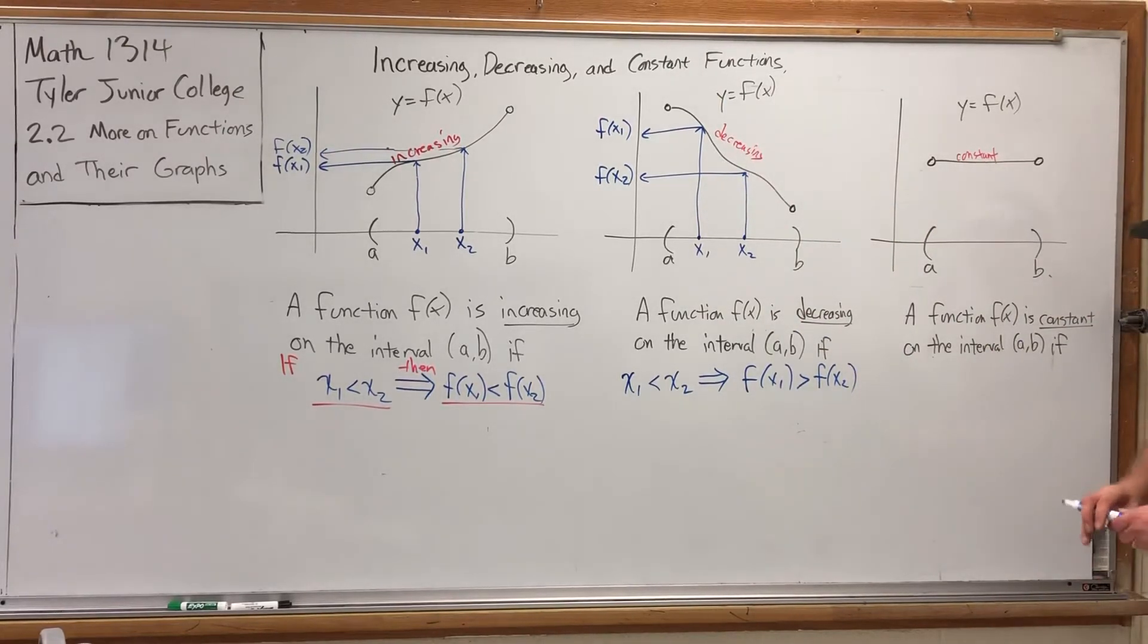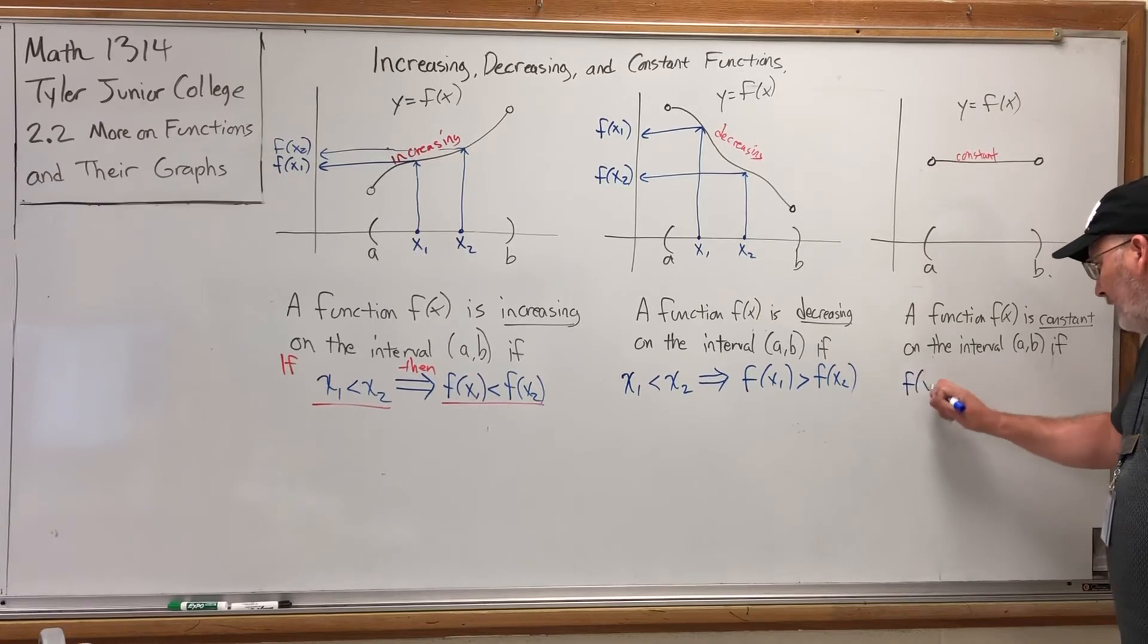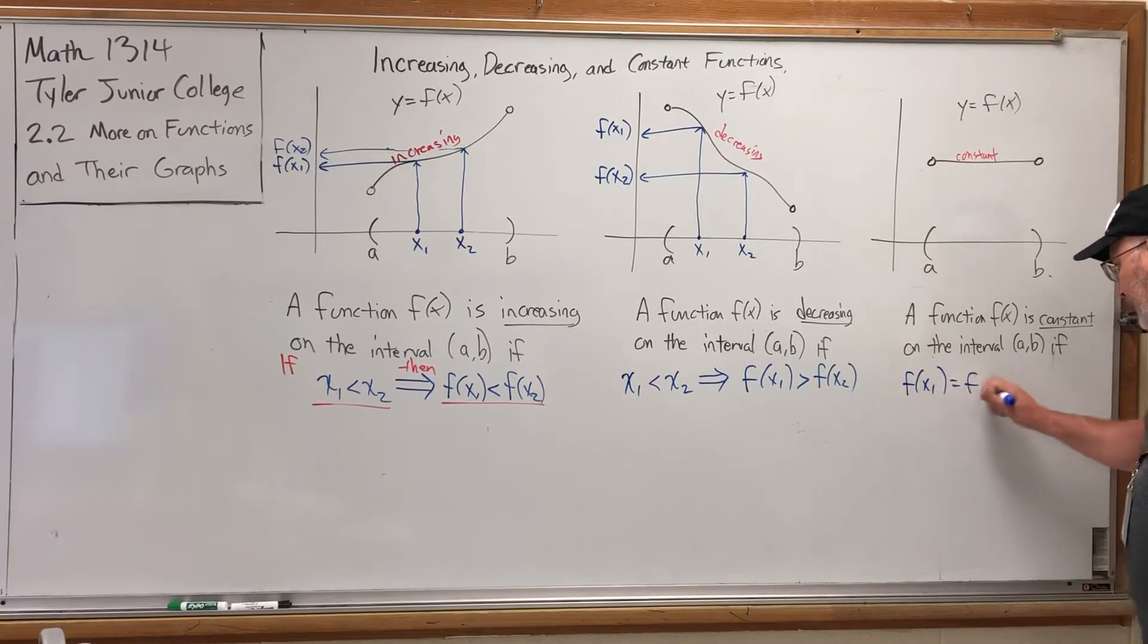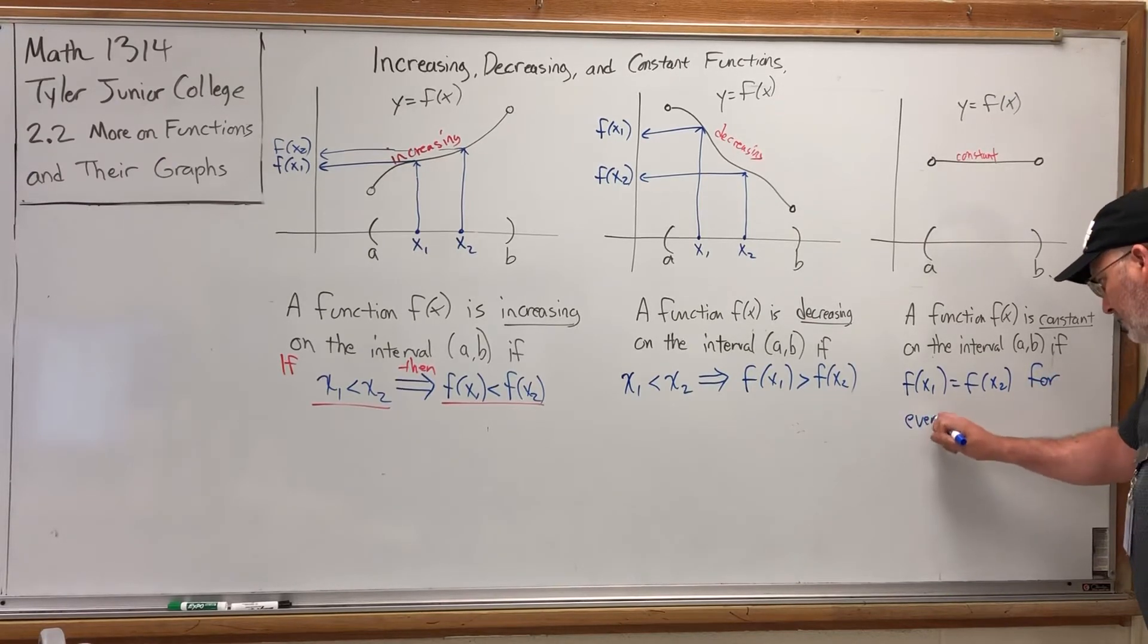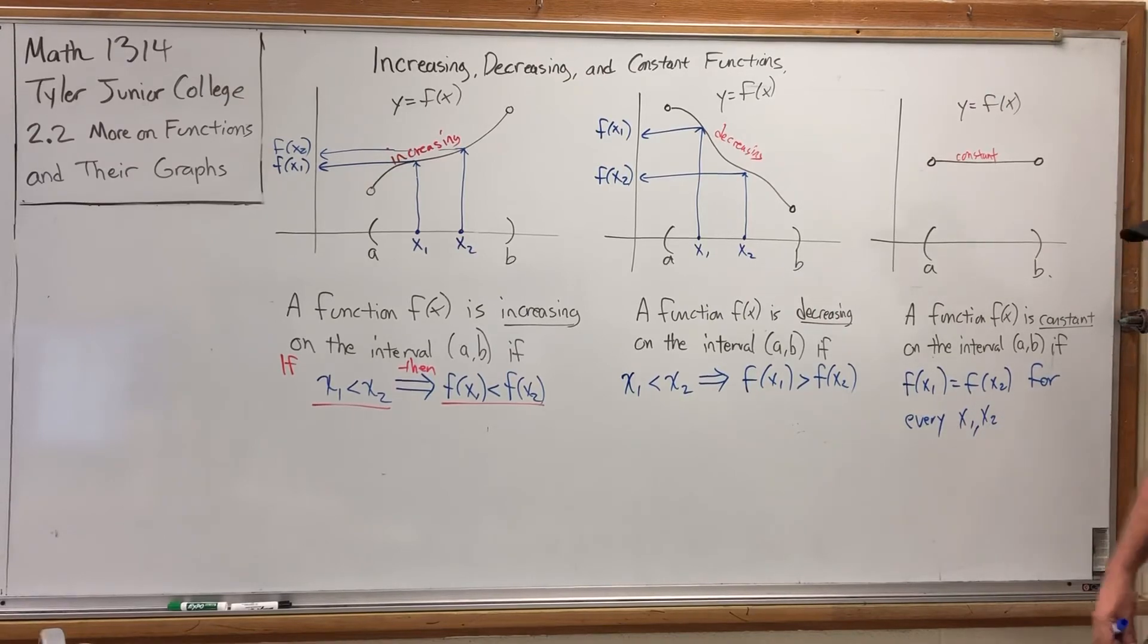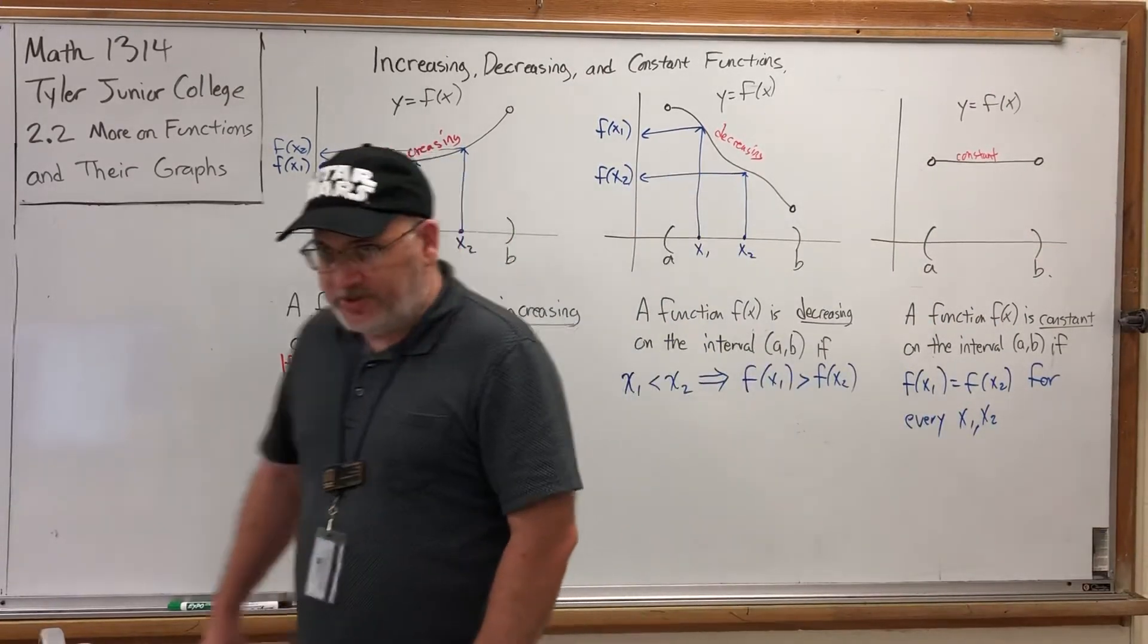For constant it's pretty easy, because what can we say about all the y values? Well, because the line is horizontal, all the y values are the same. So what we can say about the function being constant on the interval is if f of x1 equals f of x2 for every x1 and x2. So it doesn't matter which one comes first because all of their outputs would be the same.